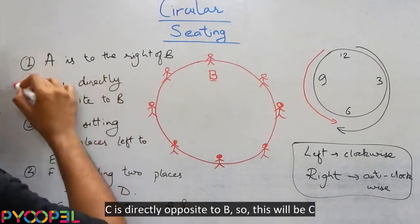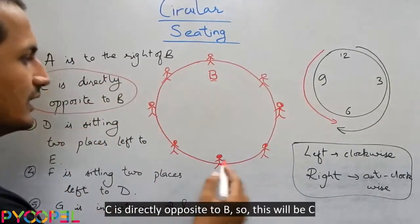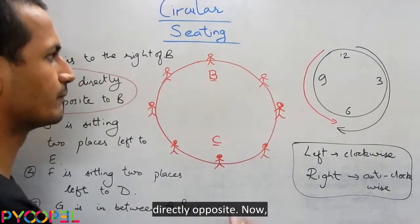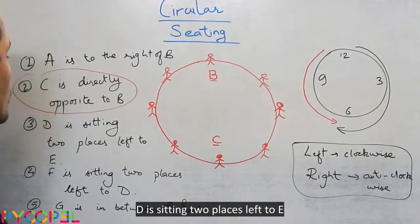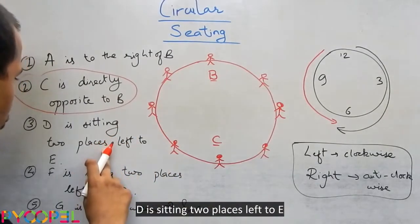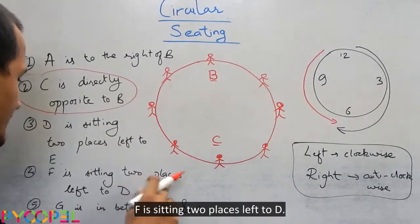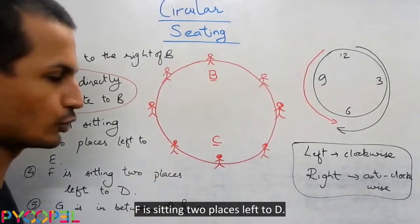Now, it is given to us that C is directly opposite to B. So this will be C, directly opposite. Now, B is sitting two places left to E, F is sitting two places left to D.